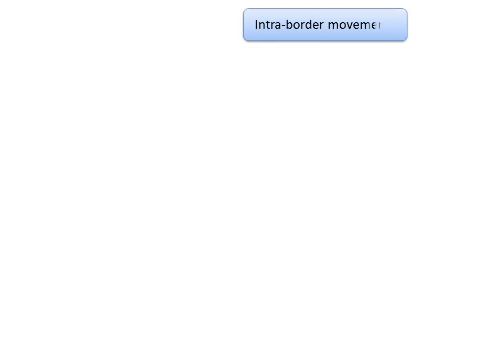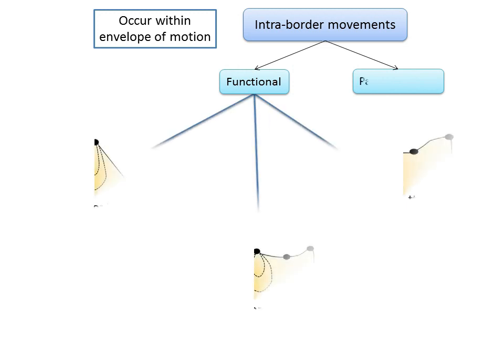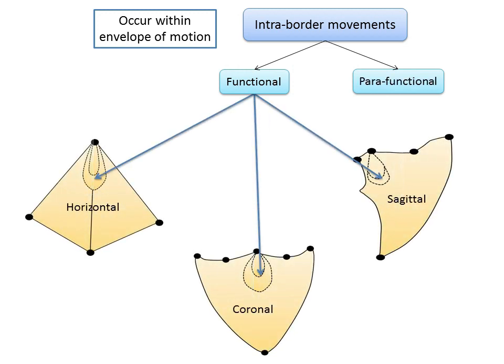Intra-border movements occur within the envelope of motion. They are all possible movements of the mandible that occur within the border envelope and are of two types: functional and para-functional movements. Functional movements include chewing, speech, swallowing, and yawning.